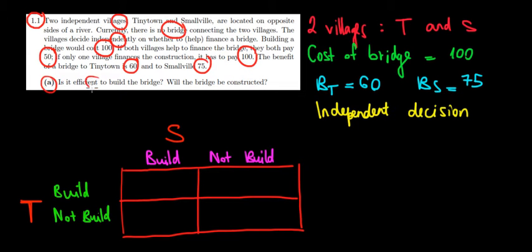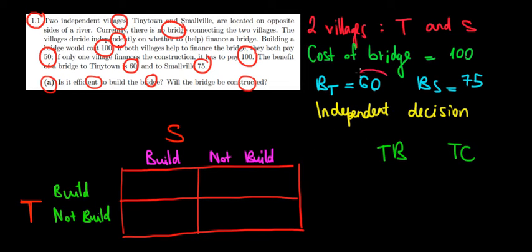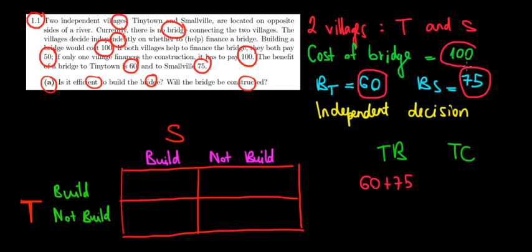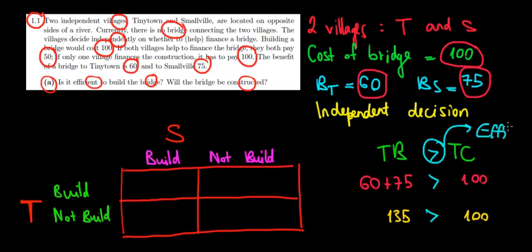In question A we ask: is it efficient to build a bridge, and will it be constructed? Starting with efficiency — efficiency is about comparing the total benefits to society relative to the total costs. The total benefits are 60 plus 75, giving us 135, whereas the total cost is 100. Since 135 is higher than 100, yes, it is efficient to build the bridge.